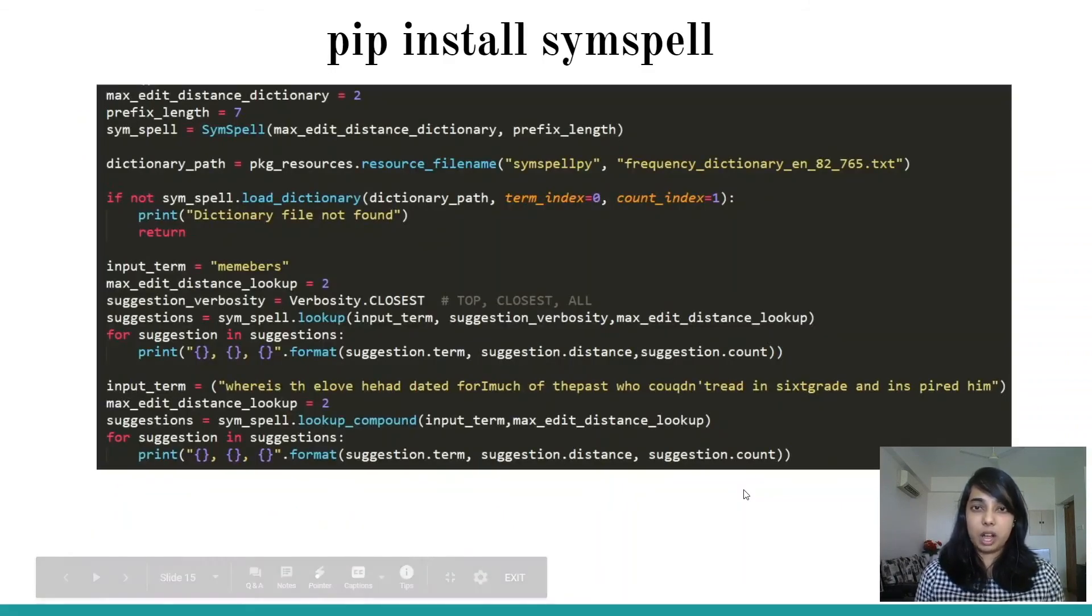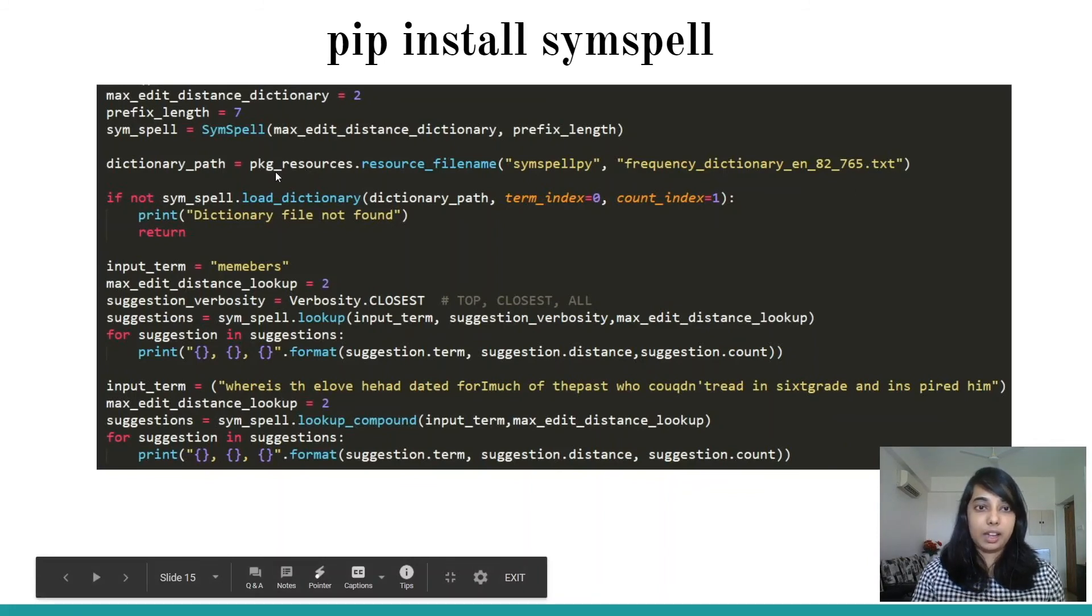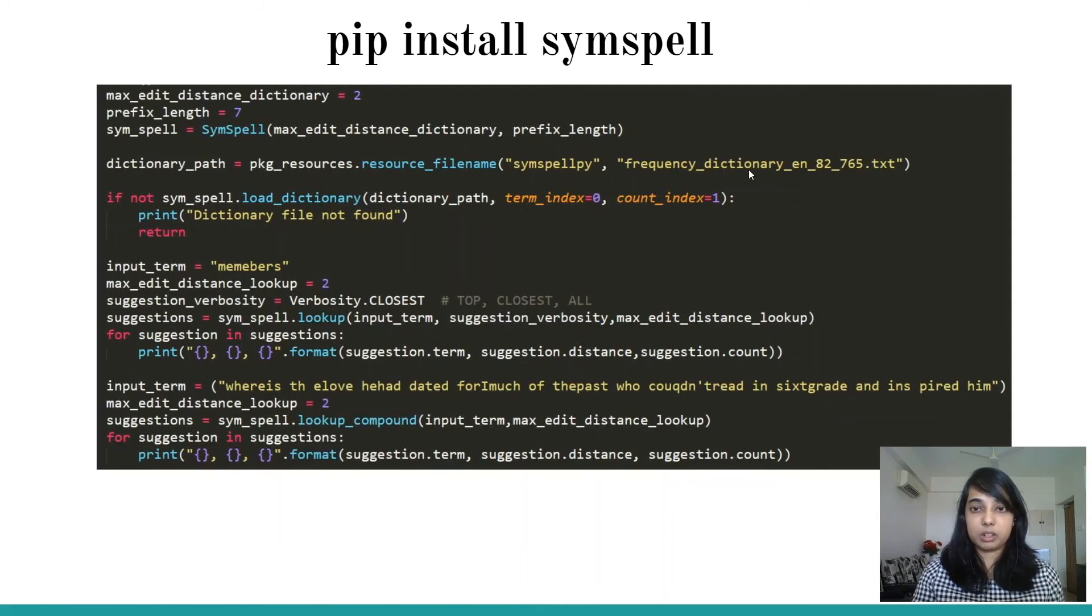Here is just a small brief on how you can invoke SymSpell and work with it. The three main things you need to do are load the frequency dictionary and give the edit distance length which determines how many operations you can do on the dictionary. Then you have two functions which are the lookup function and the lookup compound. Lookup is when you have one word and lookup compound is when you have a string of words. This helps in word segmentation. All you need to do is give the input term, give the verbosity (do you want the top suggestion, the closest suggestion or all suggestions) and you also need to give the edit distance. Be it one, two or three, based on that it will give you the suggestion terms, the distance and the count (the frequency count). These are the two functionalities and there is another which is word segmentation which you can leverage. It has helped us in our use cases so far and I hope it helps you too.